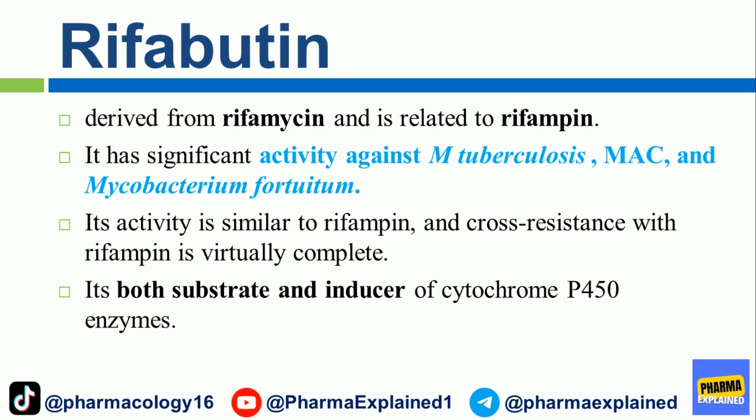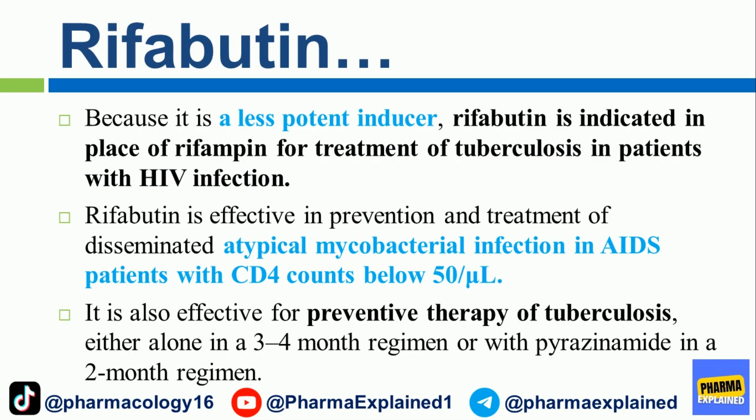Rifabutin is derived from rifamycin and is related to rifampin. It has significant activity against M. tuberculosis, MAC, and mycobacterium fortuitum. Its activity is similar to rifampin and cross-resistance with rifampin is virtually complete. It is both a substrate and inducer of cytochrome P450 enzymes, but because it is a less potent inducer, rifabutin is indicated in place of rifampin for treatment of tuberculosis in patients with HIV infection. Rifabutin is effective in prevention and treatment of disseminated atypical mycobacterial infection in AIDS patients with CD4 counts below 50/µL, and is also effective for preventive therapy of tuberculosis, either alone in a 3-to-4-month regimen or with pyrazinamide in a 2-month regimen.